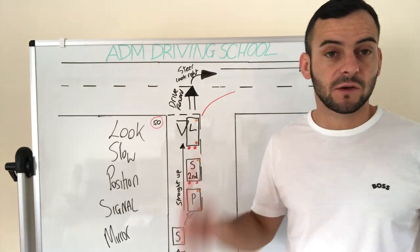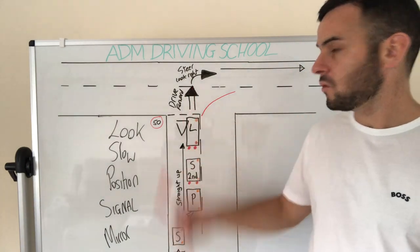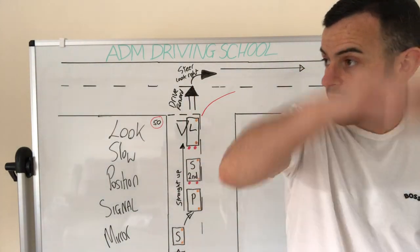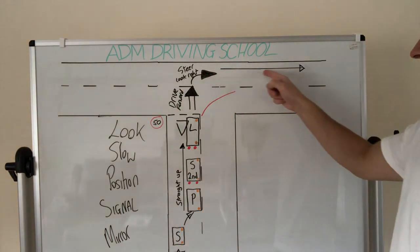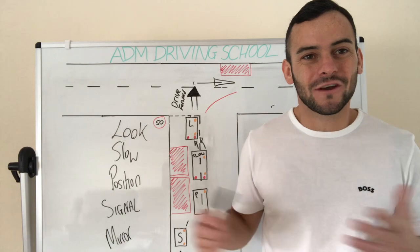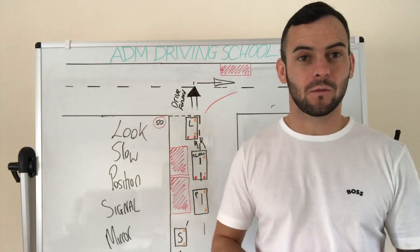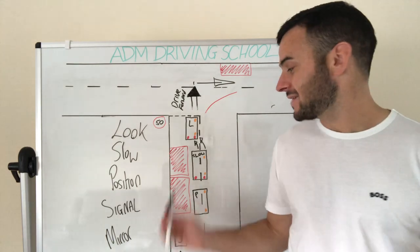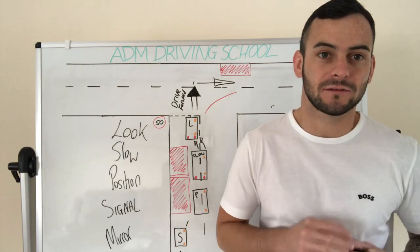That's turning right at a T junction in the perfect world. But you know from your lessons, it's never as clean cut as that.